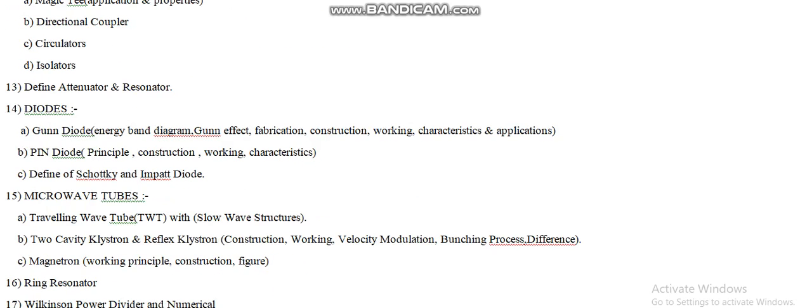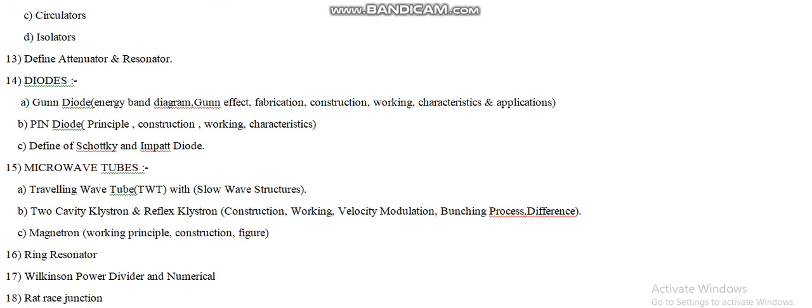Moving on to question number fourteen regarding diodes, there are four types. In part A, the Gunn diode: the examiner can ask for the energy band diagram of the Gunn diode, which works on the principle of the Gunn effect. The Gunn effect is also a two-mark question. For ten marks, we have to write the fabrication, construction, working characteristics, and applications of the Gunn diode. This is a most important question.